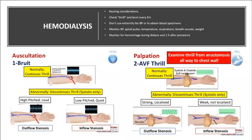Nursing considerations for hemodialysis: check for a bruit and thrill every eight hours — hear a bruit (rumbling sound with stethoscope), feel a thrill (rumbling sensation with fingers) — these indicate the AV fistula is functioning well. Do not use the extremity with the fistula for blood pressure or blood draws. Monitor blood pressure, apical pulse, temperature, respiration, breath sounds, and weight. Monitor for hemorrhage during and one hour after dialysis.